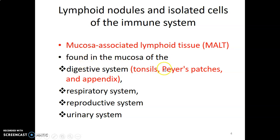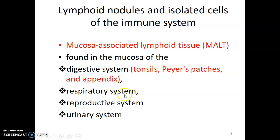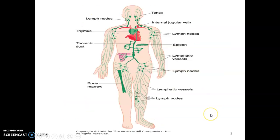For example, in the GI tract, we see them in the lamina propria and the Peyer's patches of the ileum, and also within the appendix as lymphoid nodules. In the mucosa of the respiratory tract, reproductive tract, and urinary system, we also have lymphoid nodules.